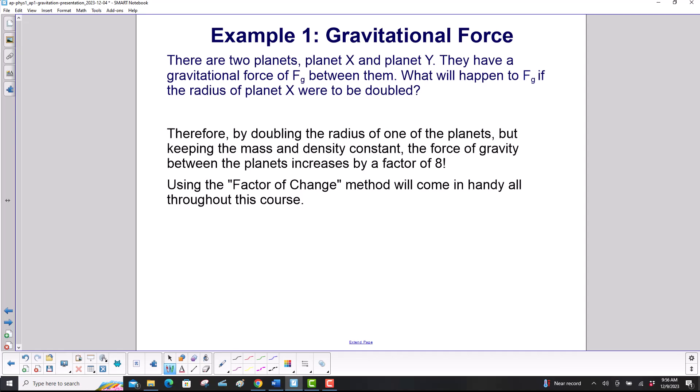Therefore, by doubling the radius of one of the planets but keeping the mass and density constant, the force of gravity between the planets increases by a factor of 8. Using the factor of change method will come in handy all throughout this course.